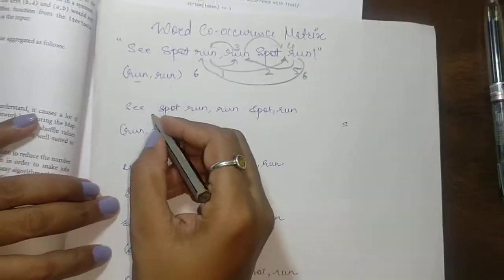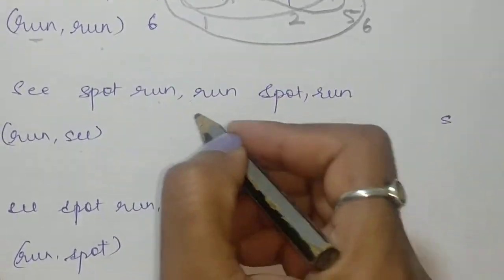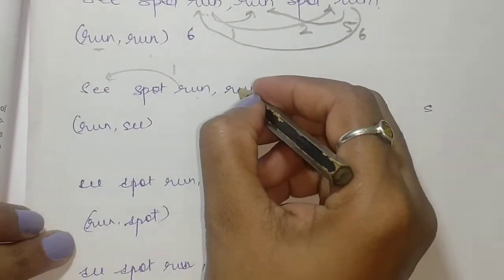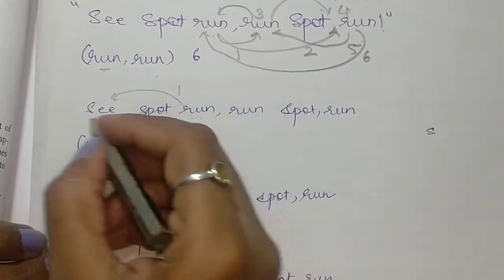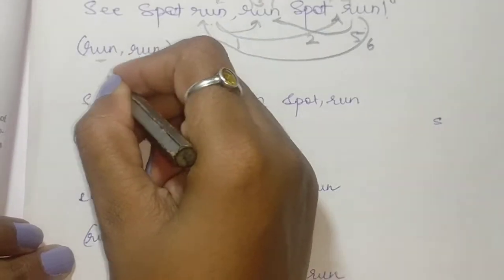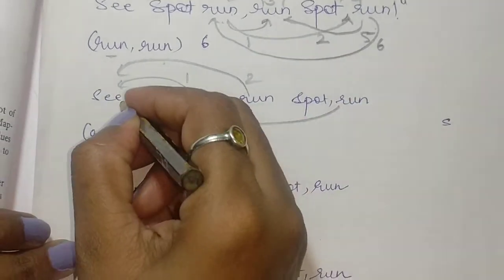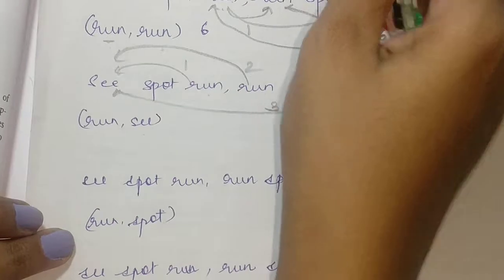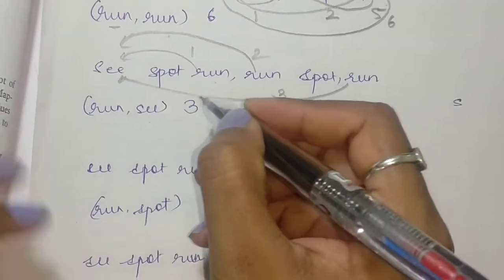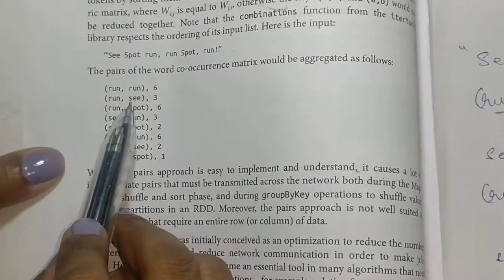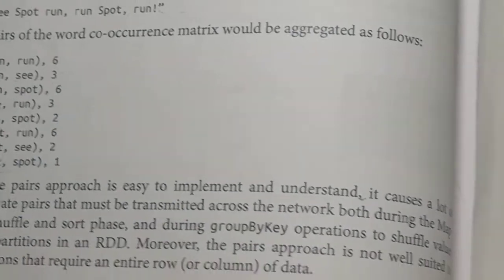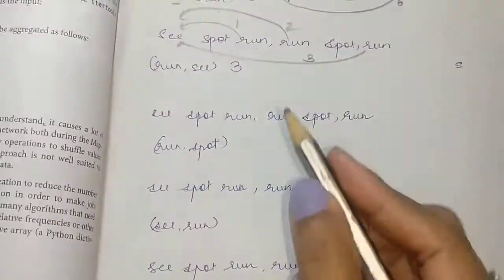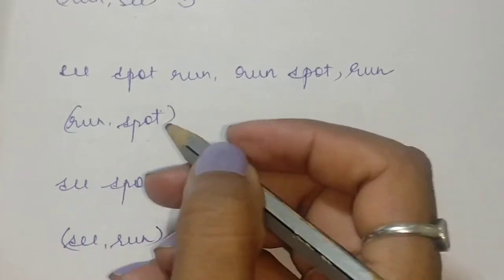Moving on, the next pair is run and see. There is only one 'see', so: run and see — first one, second one, third one. So run and see, we write the value as three. Look at the textbook — it is three.